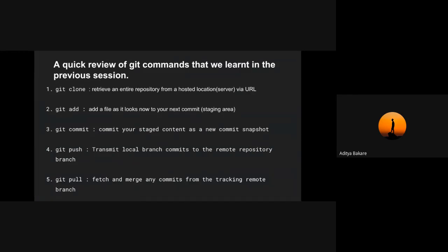A commit has a comment so you know what changes were made. You can read the comment to know what changed. If you wish to revisit your old changes, then comes git push. The commits you made are on your local machine — to push them to the URL hosted location or GitHub, you use the git push command, which transmits local branch commits to the remote repository.